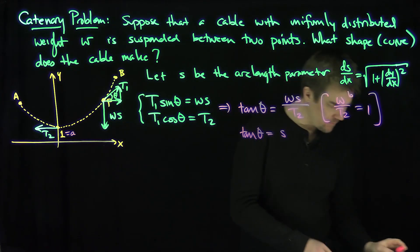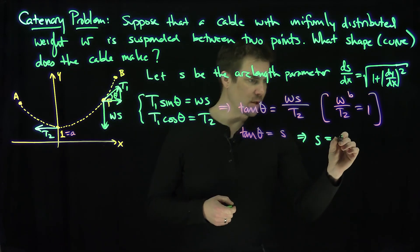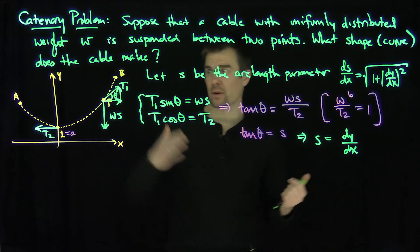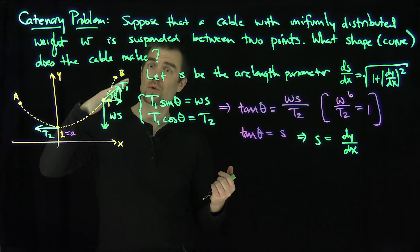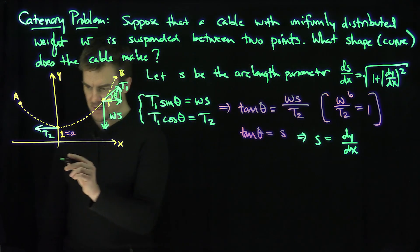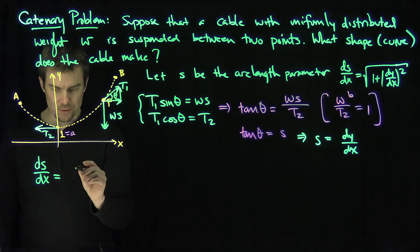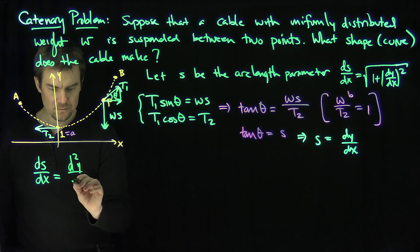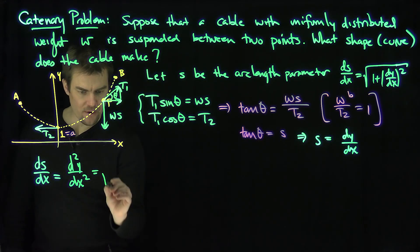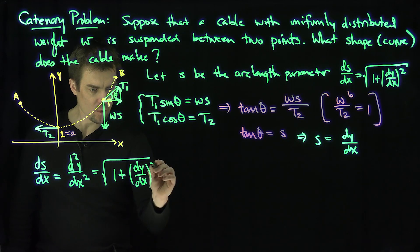Tangent of theta is really dy/dx, because that's the slope of the curve. So s is equal to dy/dx, since tangent of theta is the slope of the curve at point P. Taking the derivative with respect to x, ds/dx equals the second derivative d²y/dx². Since we know ds/dx equals the square root of 1 plus (dy/dx) squared, we arrive at our second-order differential equation: the square root of 1 plus (dy/dx)² equals d²y/dx².